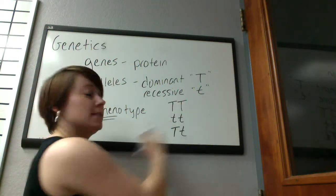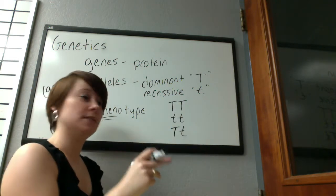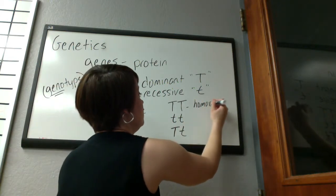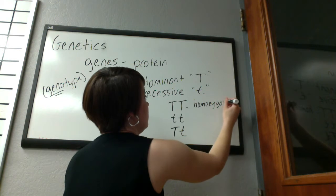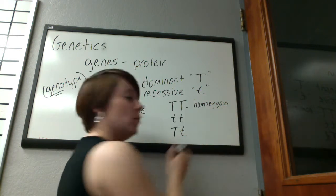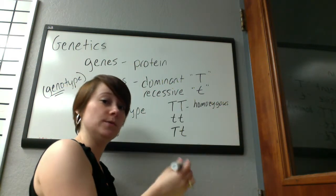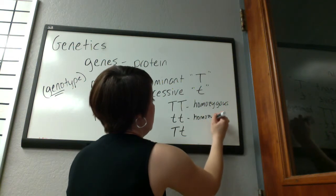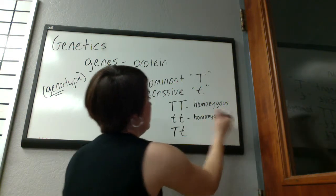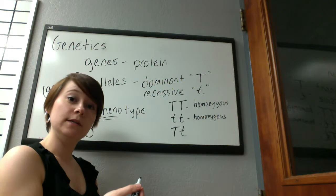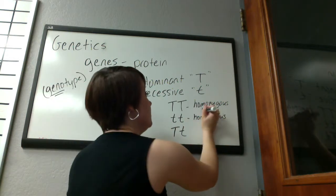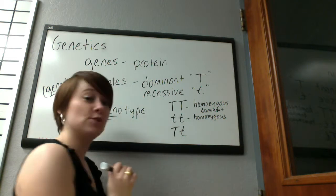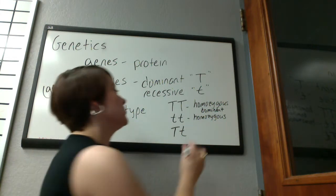If you have two of the same allele — a duplicate of the same allele — that is termed homozygous. Homo means same, like homosexual. If it's two of the dominant allele, then it's homozygous dominant. If it's two of the recessive allele, it's homozygous recessive.